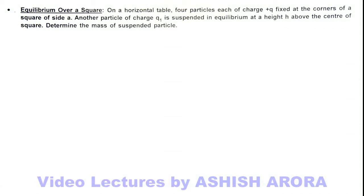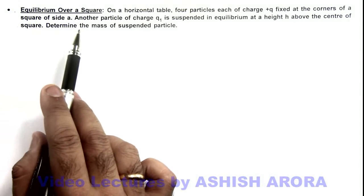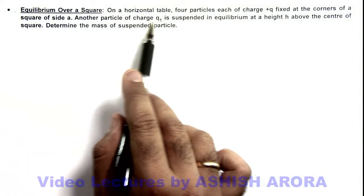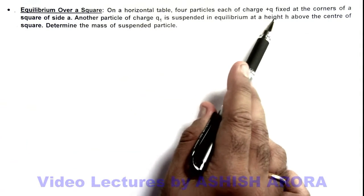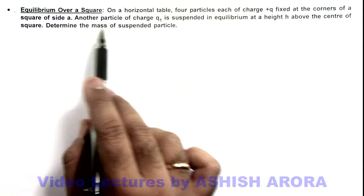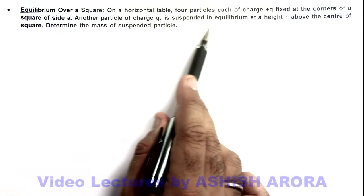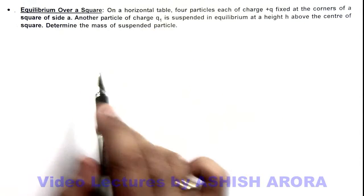In this illustration we'll study about equilibrium over a square. In this situation we are given that on a horizontal table, four particles each of charge plus q are fixed at the corners of a square of side a. And here another particle of charge q1 is suspended in equilibrium at a height h above the center of the square. And we are required to find the mass of the suspended particle.